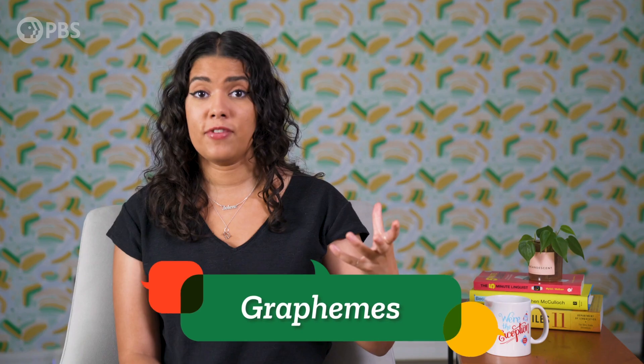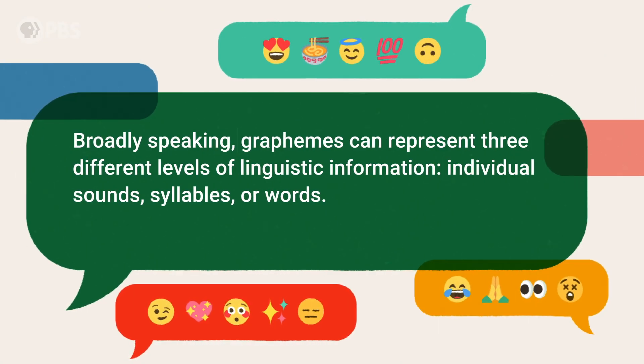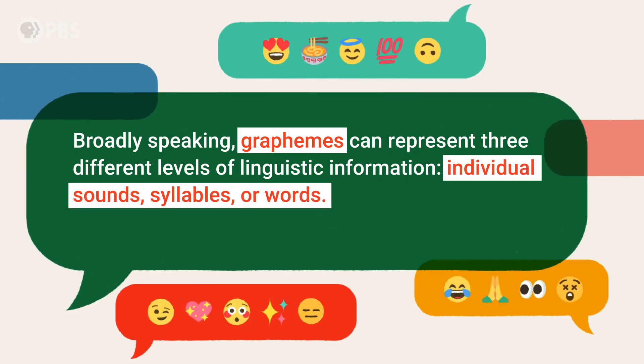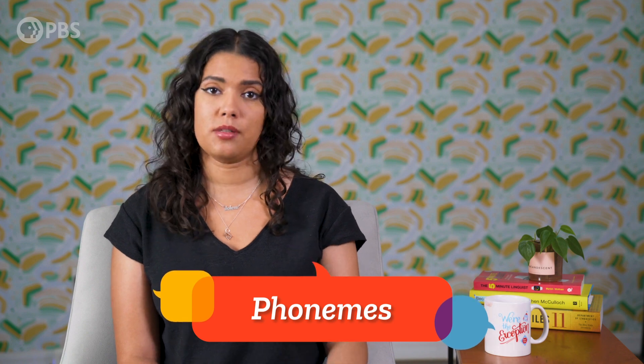A writing system involves two parts: there's the symbols, or graphemes, and then there's what the symbols stand for. Broadly speaking, graphemes can represent three different levels of linguistic information: individual sounds, syllables, or words. Let's start with graphemes that represent the smallest amount of information — single sounds, or phonemes.